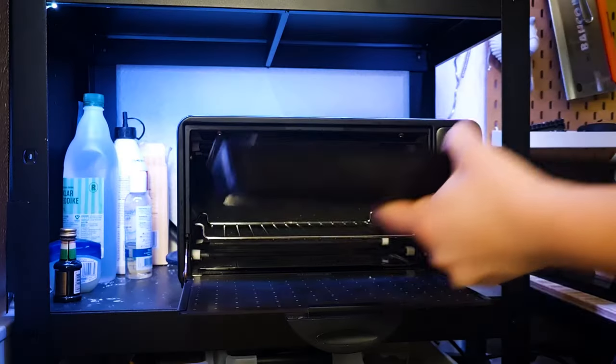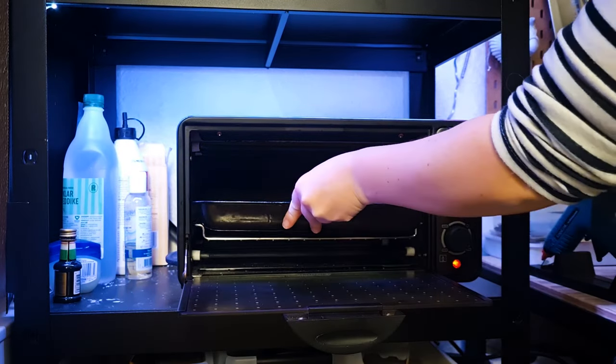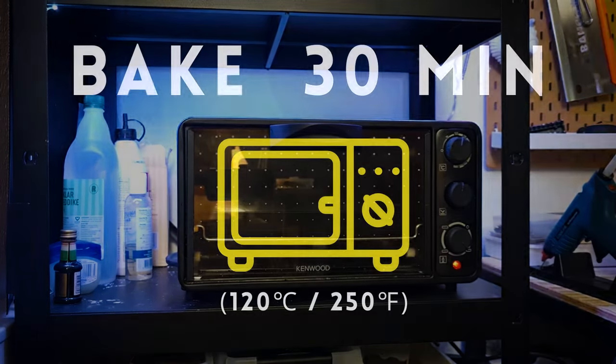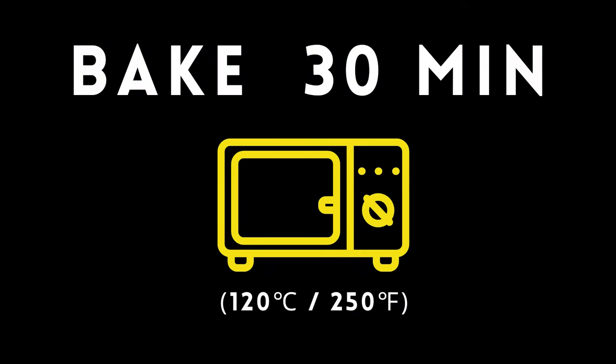Next the whole mold goes into the oven. Both the silicon and the plaster are fine to be baked just don't heat it up or cool it down too quickly as otherwise you risk the plaster cracking.